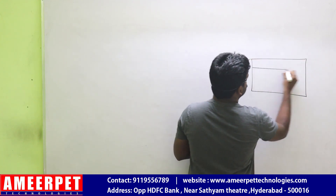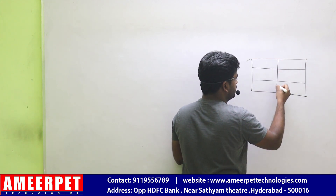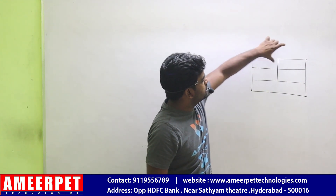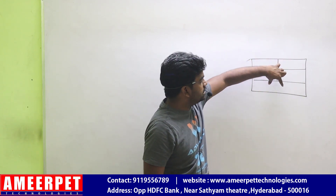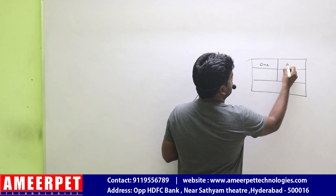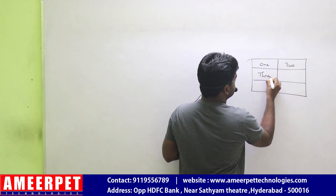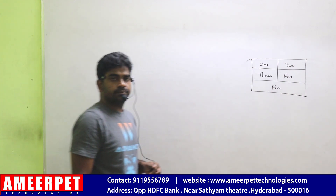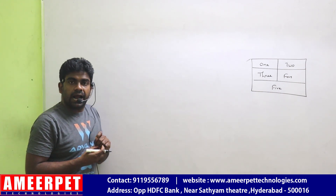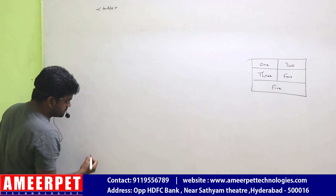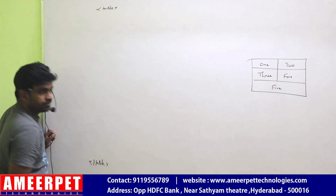I am simply creating this table. Generally how we represent: username text box, password text box, and then a login or submit button. Here I'm representing values one, two, three, four, and five. I just want to make it center aligned. Now let's look at how to apply column span and row span in the table.